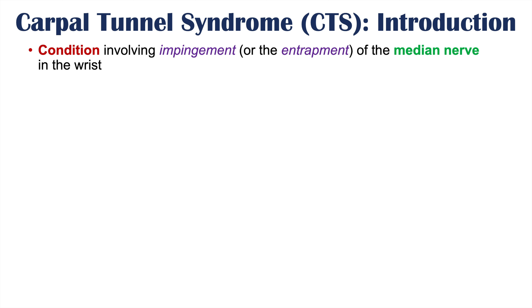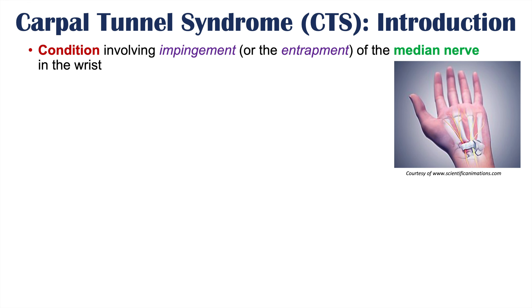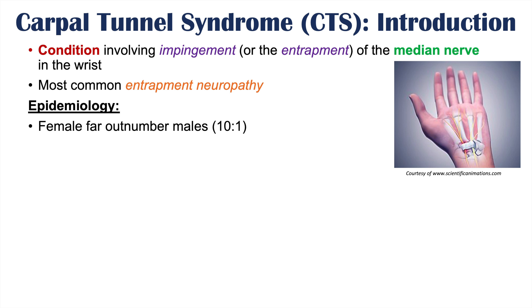Carpal tunnel syndrome is a condition involving impingement or entrapment of the median nerve in the wrist. The median nerve runs through the wrist and in this condition it gets compressed. It is the most common entrapment neuropathy, and epidemiology shows that females far outnumber males — the ratio is approximately 10 to 1.